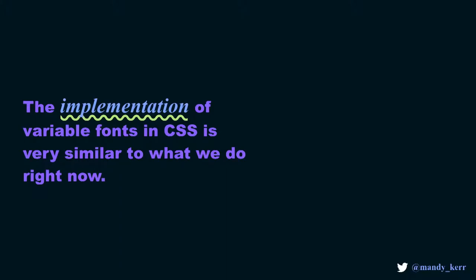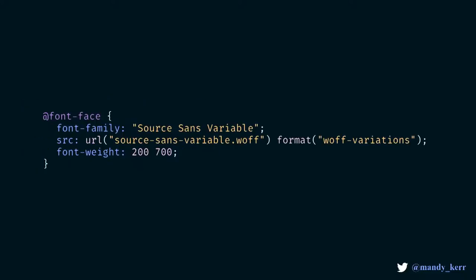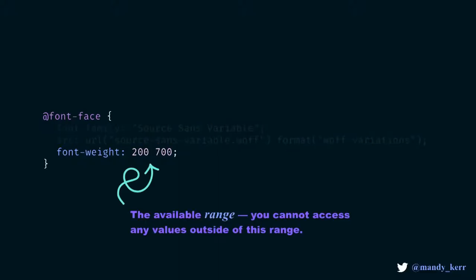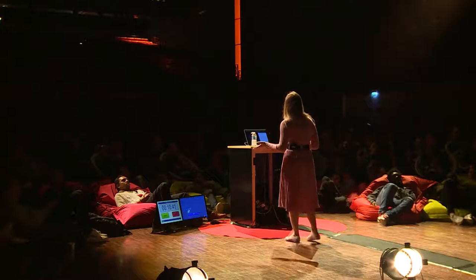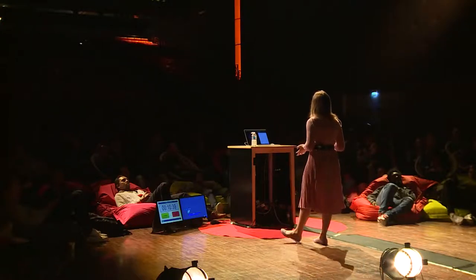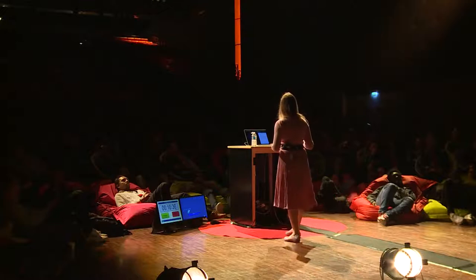The way we use variable fonts in CSS is pretty much the same as we use fonts now. We set up the fonts using @font-face, pretty much the same. The main change is how we define variations for descriptors like font-weight, font-stretch, and font-style. So in this example using font-weight: normally if we have a light and a bold version we'd set up two different @font-face blocks. But with variable fonts we don't need to do that — we set up one, we set the font-weight property, and then define a range of values, like 200 to 700.